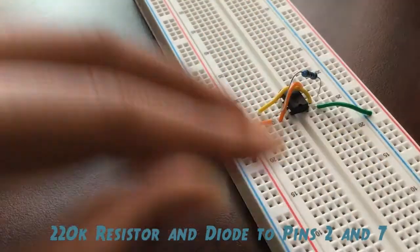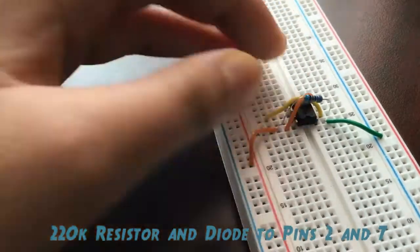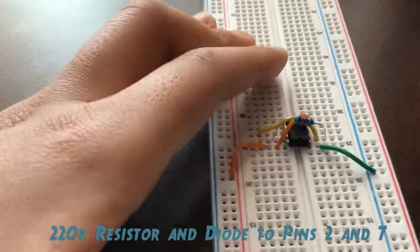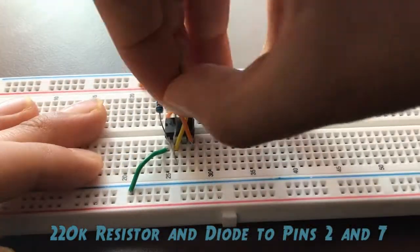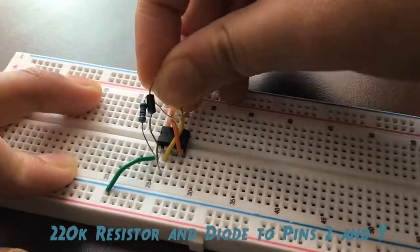Next, place a 220 kiloohm resistor between pin two and pin seven. After that, we're going to do the same thing with the diode.